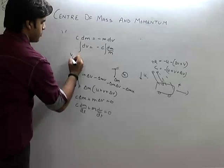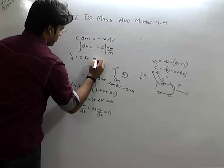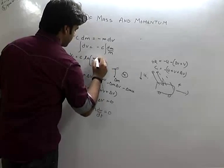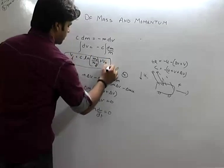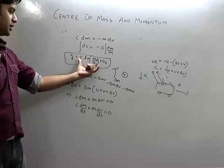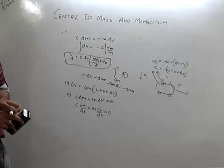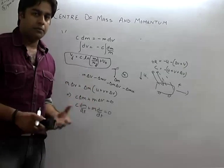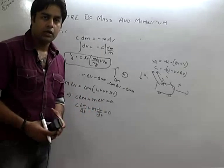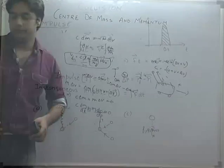After integrating, the final velocity VF comes out to be C·ln(M0 upon MF) plus the initial velocity V0. So delta V, how much velocity increases, equals C·ln(M0 upon M_final). This is the rocket equation. The booklet has a simple example — try it yourself, and if you have any doubts you can ask your mentors.